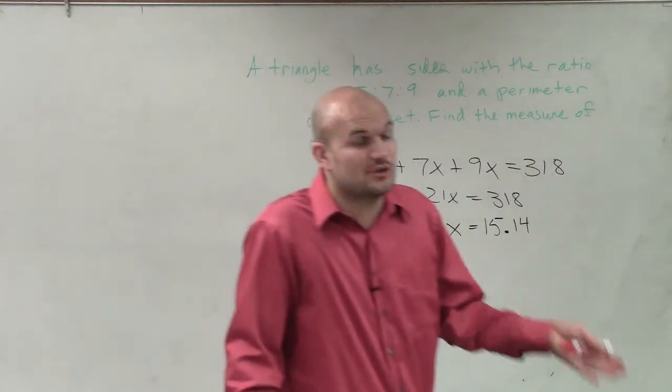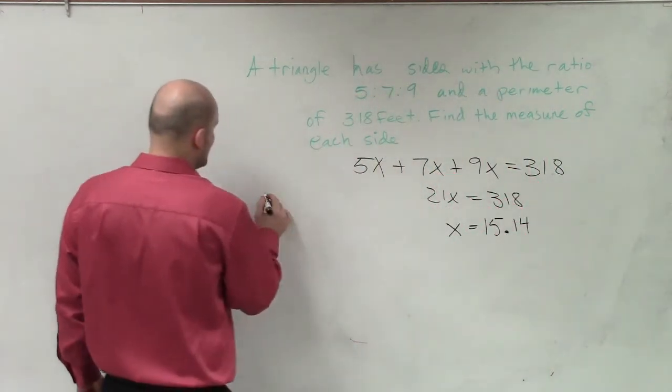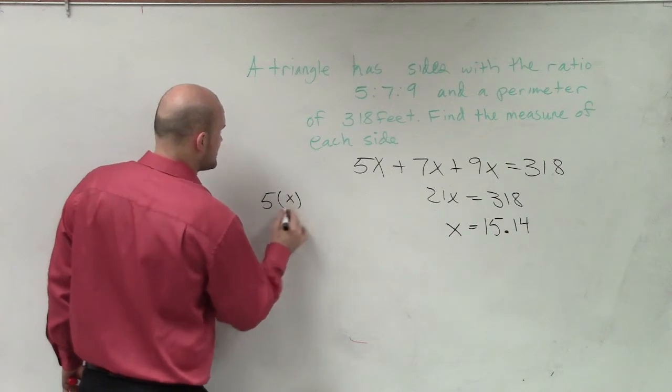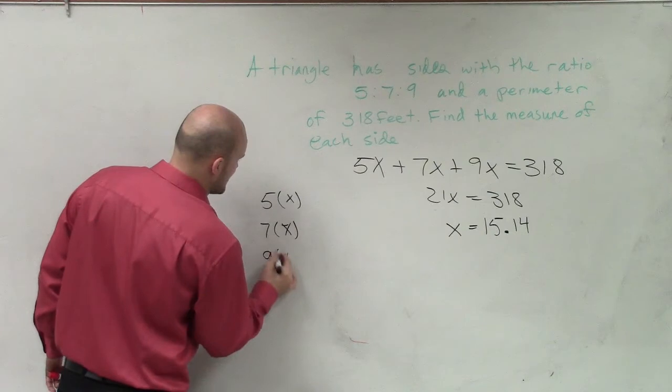The question doesn't say find x. The question says find the length of each side. Well, if one side was 5 times x, the other side was 7 times x, and the third side is 9 times x.